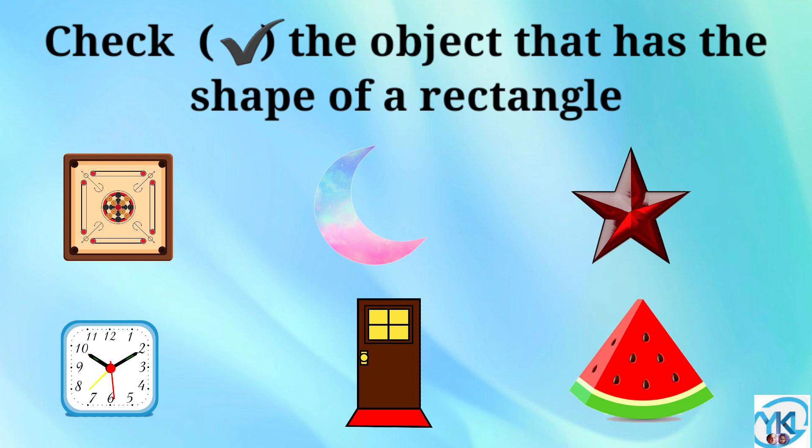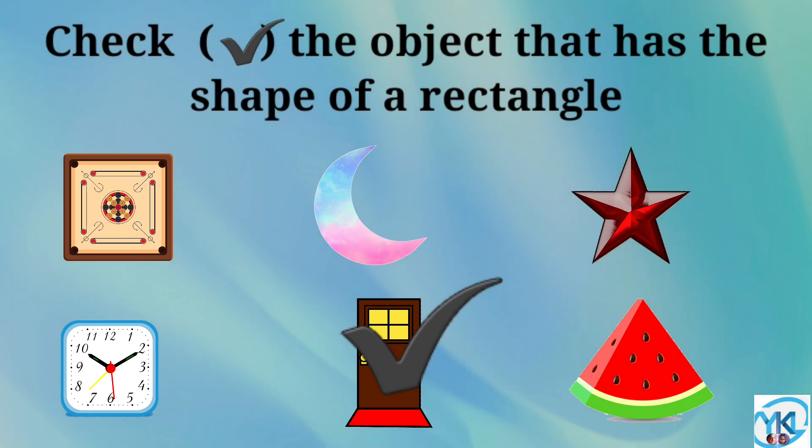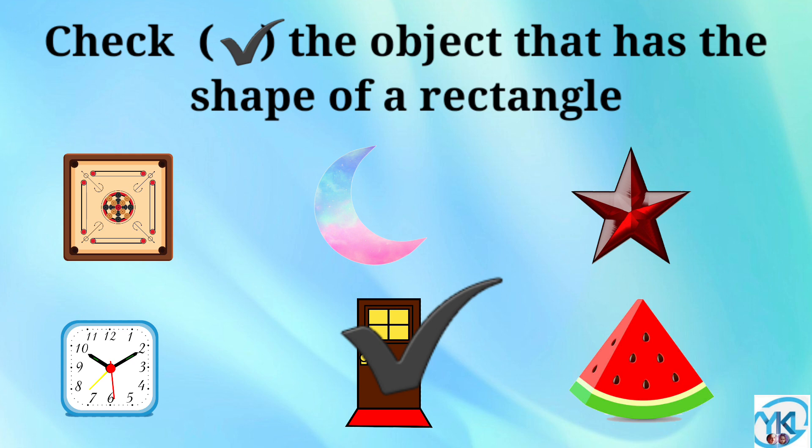Check the object that has the shape of a rectangle. The door has the shape of a rectangle. Good job, you are correct. The door has the shape of a rectangle.